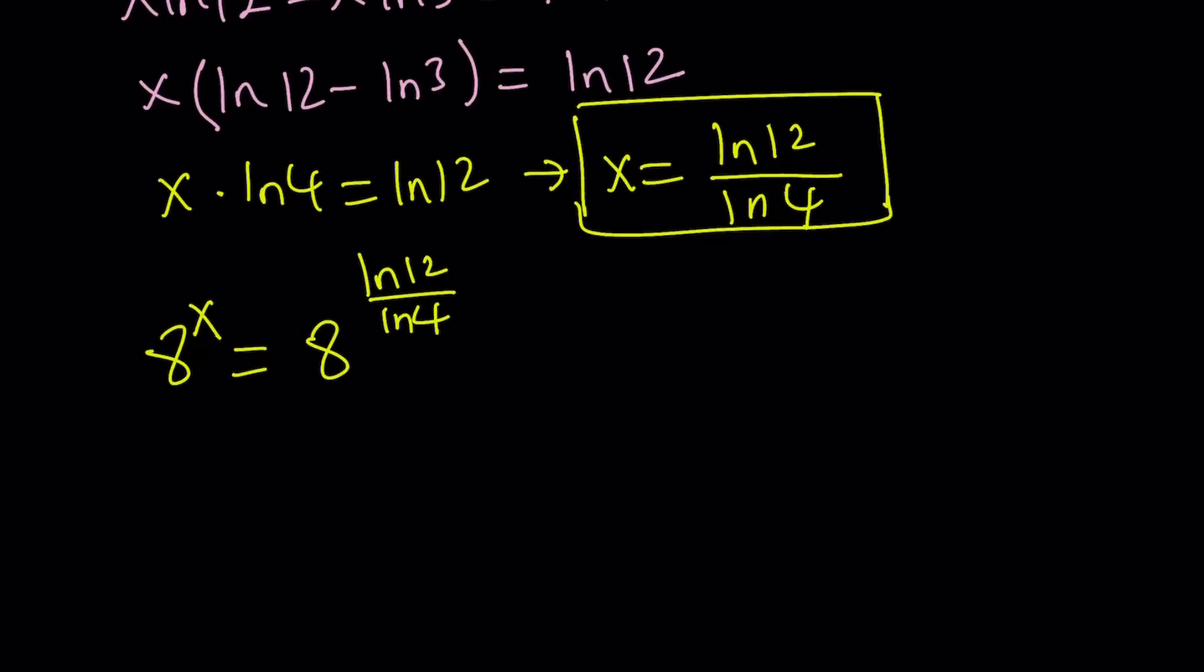So 8 to the power x becomes 8 to the power ln 12 over ln 4. At this point I can use a lot of different properties. Definitely you can break this down in so many ways, but I want to use something that I really like, which is change of base. The change of base tells us that ln 12 over ln 4 can be written as log 12 with base 4. In one of the previous videos we talked about change of base formula, and the 12 is in the numerator, therefore it's going to be above.